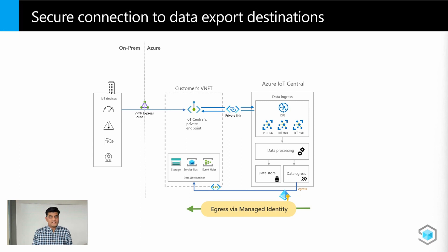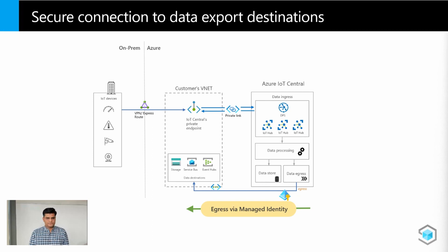IoT Central provides system-assigned managed identities. Using those system-assigned managed identities, you can securely connect to other Azure resources with no credentials involved, and there are no secrets to store or manage. Using managed identities has a lot of benefits: you don't need to manage credentials, those credentials are not even accessible to you, you can use managed identities to authenticate to any resource that supports Azure Active Directory authentication, and best of all, there is no additional cost involved.